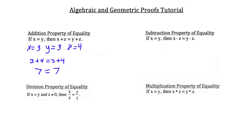They're called properties of equality because they should be equal at the end. The subtraction property of equality states that if x equals y, then x minus z equals y minus z. Using the same values: 3 minus 4 equals 3 minus 4, so negative 1 equals negative 1, which is true. They're equal because it's the subtraction property of equality — we're subtracting from both sides.